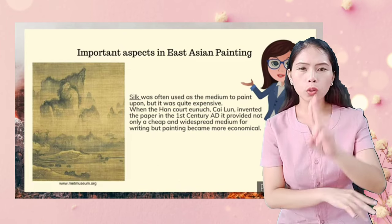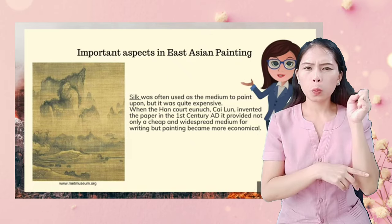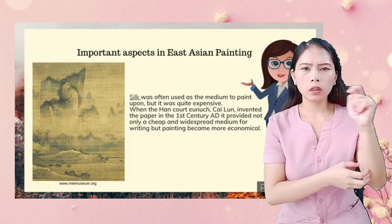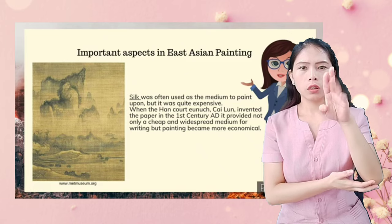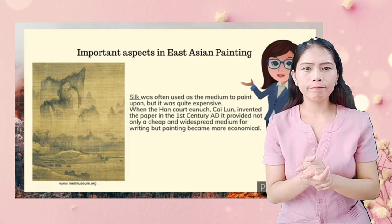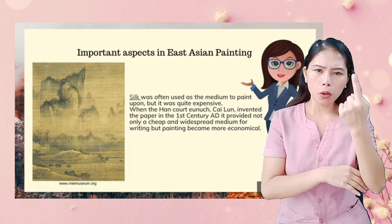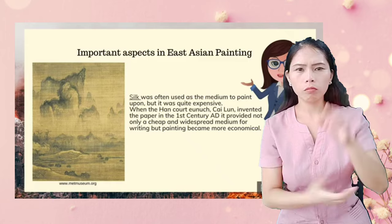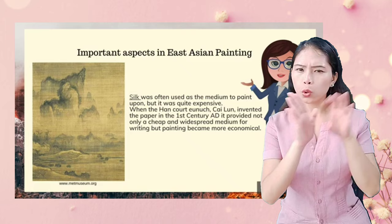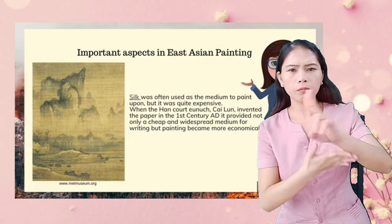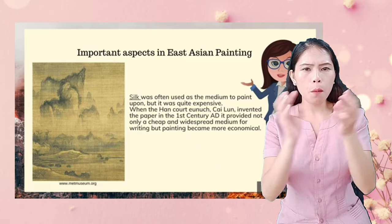Silk was often used as a medium to paint upon, but it was quite expensive. When Cai Lun invented paper in the first century, it provided not only a cheap and widespread medium for writing, but painting also became more economical.